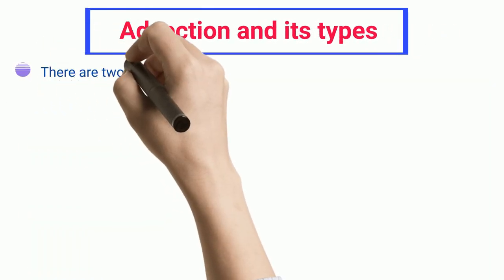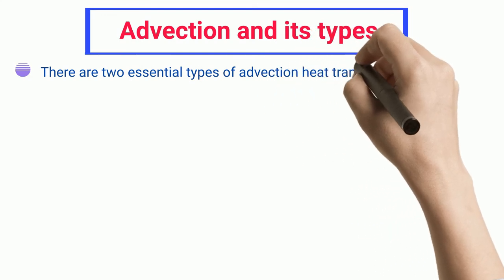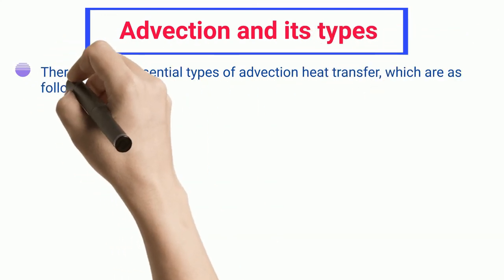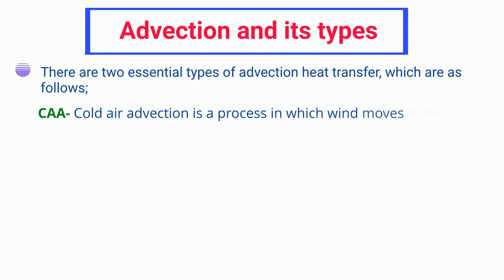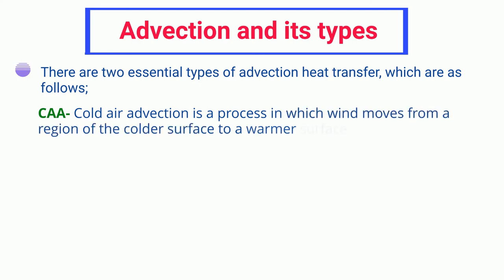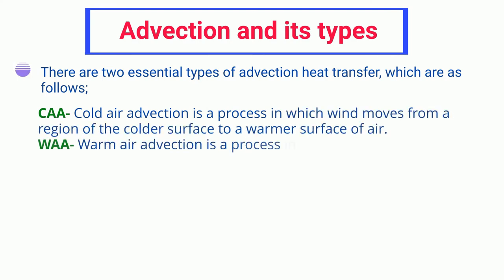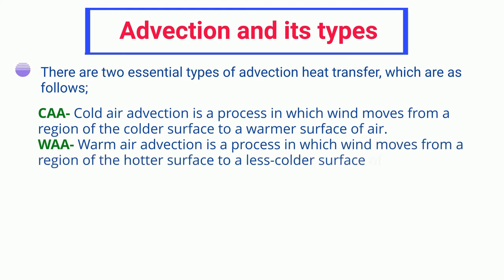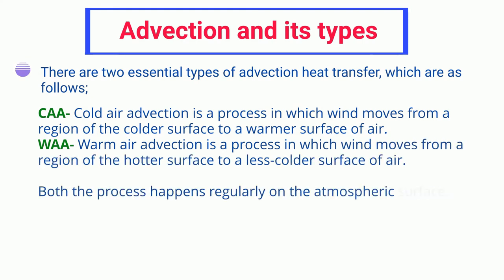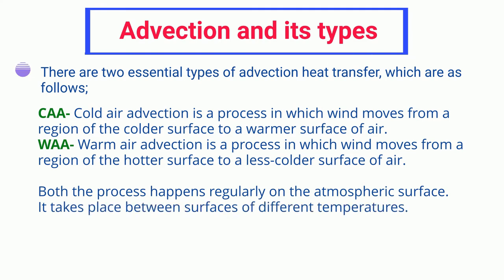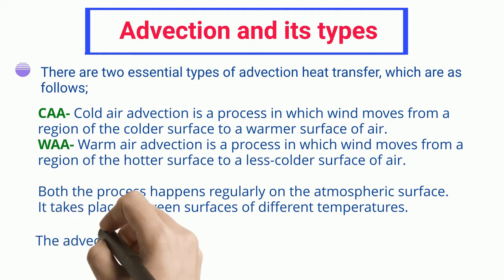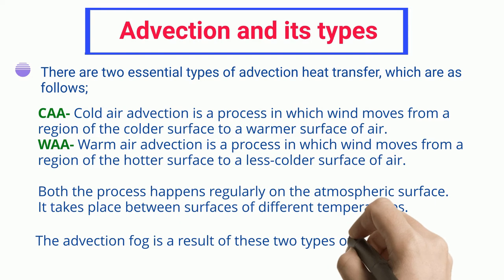There are two essential types of advection heat transfer. CAA — Cold Air Advection — is a process in which wind moves from a region of a colder surface to a warmer surface of air. WAA — Warm Air Advection — is a process in which wind moves from a region of a hotter surface to a less cold surface of air. Both processes happen regularly on the atmospheric surface between areas of different temperatures. Advection fog is a result of these two types of advection.